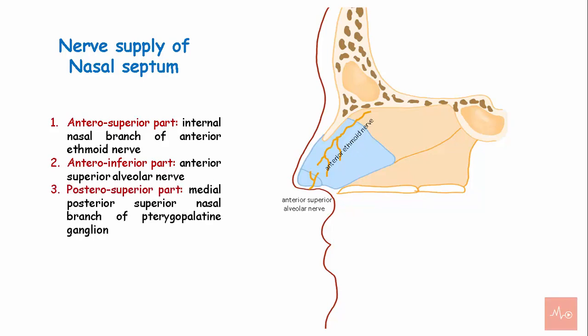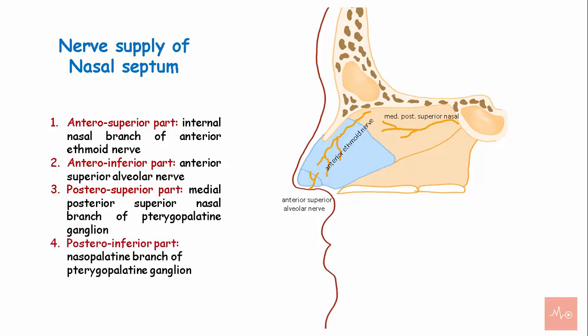The posterior superior part is supplied by the medial posterior superior nasal branch of the pterygopalatine ganglion. The posteroinferior part is supplied by the nasopalatine branch of the pterygopalatine ganglion. Special sensory nerves are present in the upper part of the nasal cavity, which are responsible for olfaction.